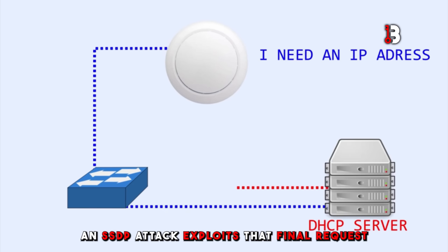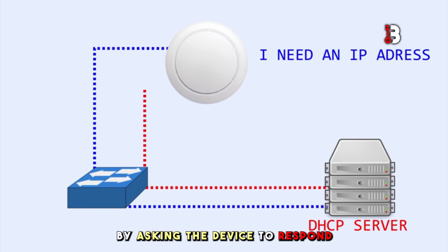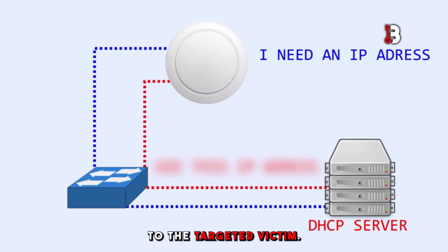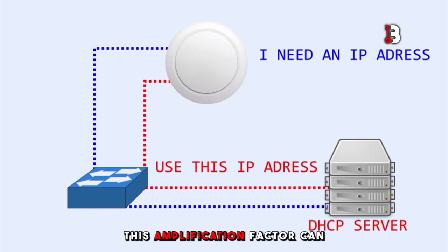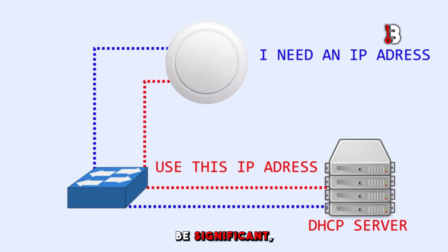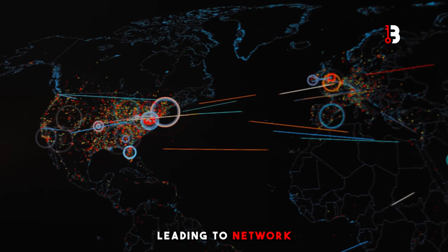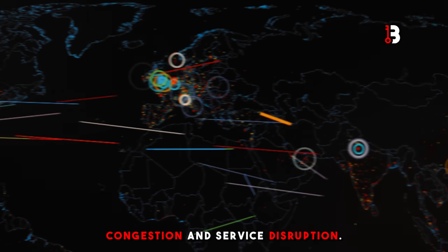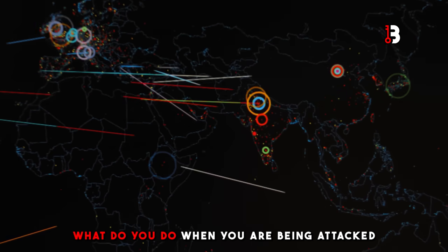An SSDP attack exploits that final request for services by asking the device to respond to the targeted victim. This amplification factor can be significant, causing a flood of traffic to the target leading to network congestion and service disruption.